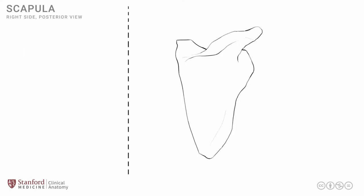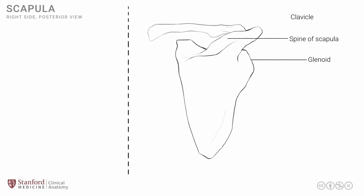Note again, this is the posterior view of the right scapula. We can put some structures on the scapula to orient ourselves. The first is the glenoid, which is the area of articulation on the lateral side of the scapula for the shoulder joint. The other important structure is the spine of the scapula, a shelf-like structure that emanates from the posterior side of the scapula and ends in the formation of the acromion process. From the acromion, the clavicle articulates with it to complete this bony anatomy.